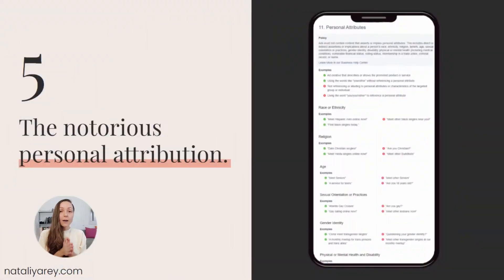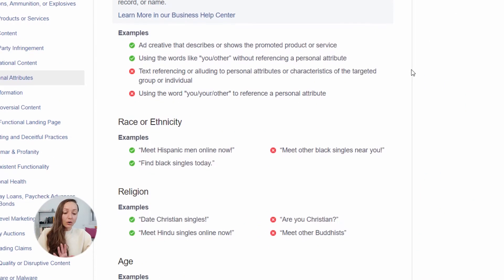Reason number five is something I was hesitant to put in this video because it can get your entire ad rejected altogether and risk your account in general — but it's so important. That is the notorious personal attribution. I'm sure you've heard advertisers say 'do not use the word you because Facebook will not allow your ad to be displayed.' This is not true. Facebook has nothing against the use of the word 'you.' What Facebook does have something against is giving the other person some kind of attribution or stating a fact about something they do not want or cannot change. Let me share this straight from Facebook's page.